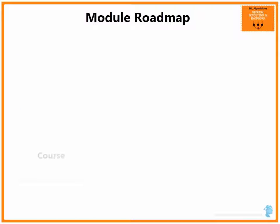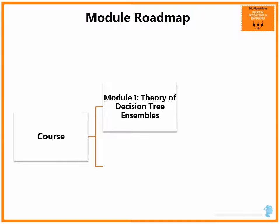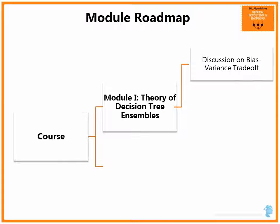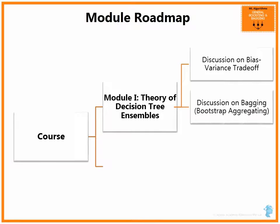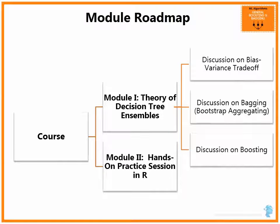Module Roadmap: this course is divided into two major modules. In Module 1, we will discuss the Theory of Decision Tree Ensembles, further divided into the Bias-Variance Trade-off, why we need Ensembles instead of a Single Decision Tree, Bagging or Bootstrap Aggregating, and Boosting. In Module 2, we will have a Hands-On Practice session in R.